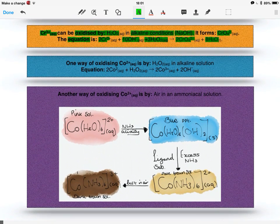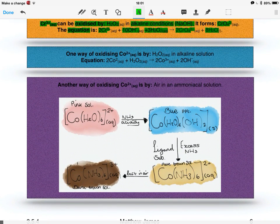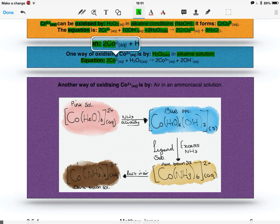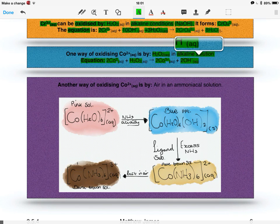The next oxidation we need to know about is the cobalt two plus ions. However, there's two methods for this. The first one is again by hydrogen peroxide in alkaline solution, and the equation for this is two cobalt two plus, add hydrogen peroxide to form two cobalt three plus, add two hydroxides.